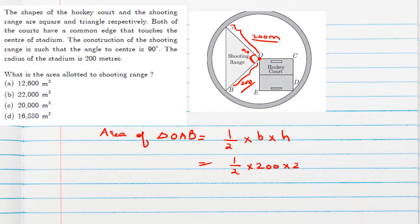So 200 into 200. It will be 100, and finally 20,000 meter square. That is option C.